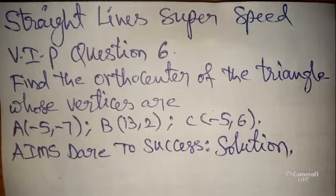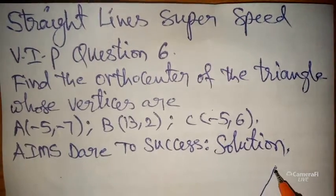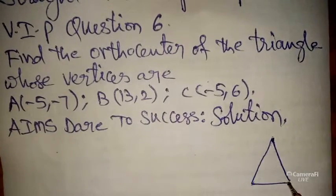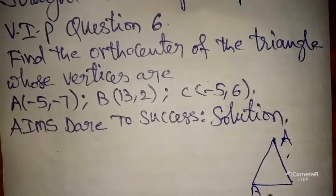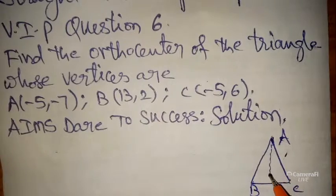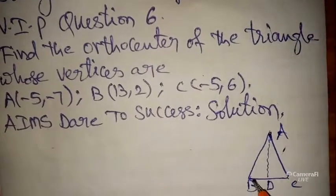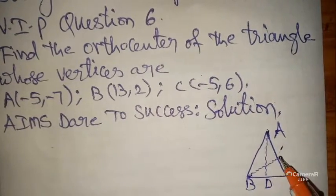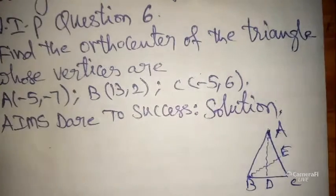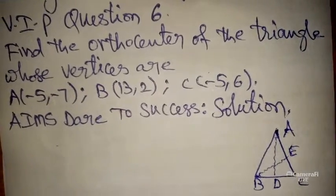Now I wanted to start. By using these three points, I wanted to take one triangle like this — triangle ABC. From point A to side BC, I wanted to take one point D. Next, from point B to side AC, it is point E.